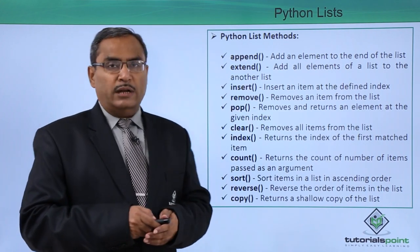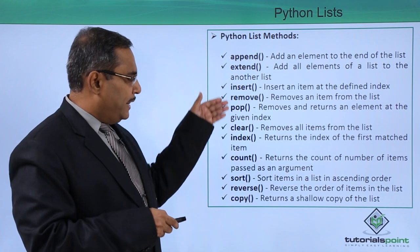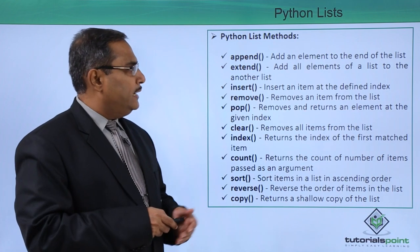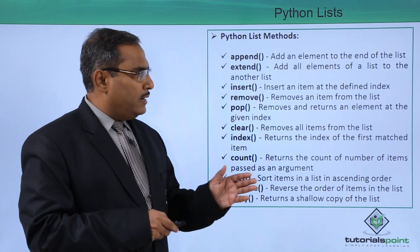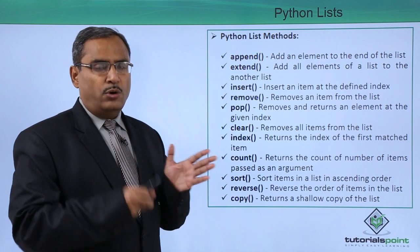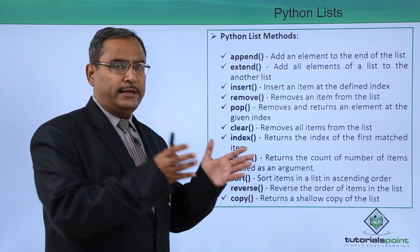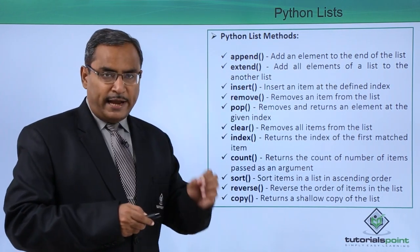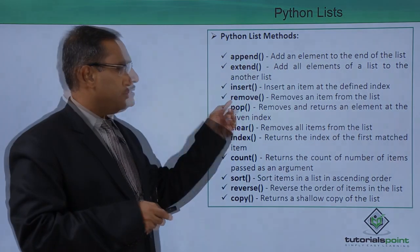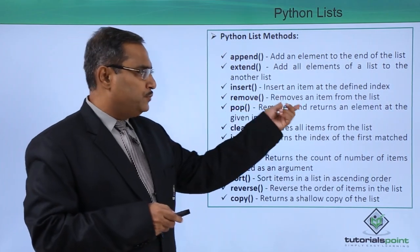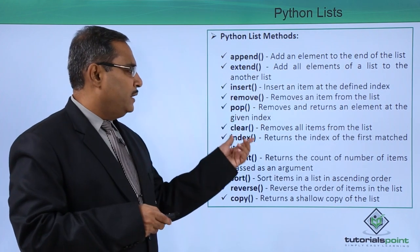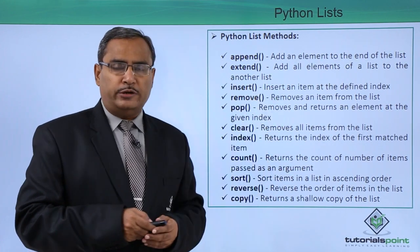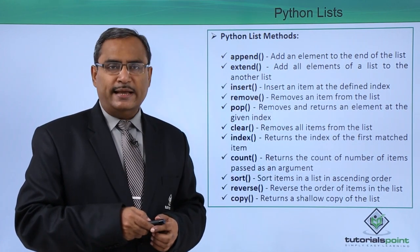These are the Python list methods. The append method adds an element to the end of the list. Extend adds all elements of one list to another list — a collection of elements will get appended. Insert places an item at the defined index of the list. Remove deletes an item from the list. We also have pop, clear, index, count, sort, reverse, and copy, with short descriptions provided for all these list methods.